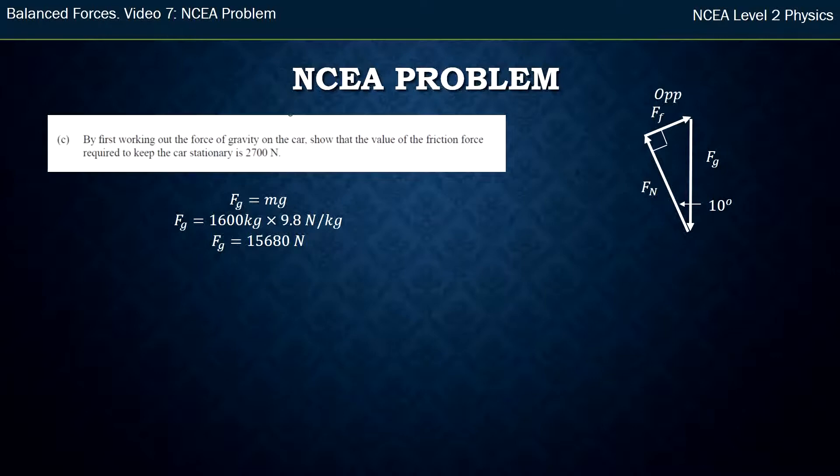Okay, then I label my vector addition diagram. I've got my opposite, which is friction, my adjacent, which is the normal force, and my hypotenuse. Remember hypotenuse is always opposite the 90 degree angle. I want to find friction force, and I know my gravity force. So these are the two sides of the triangle I care about. I've got opposite and hypotenuse. I do my SOHCAHTOA, and opposite hypotenuse is SOH. So I'm going to use sine. So sine 10 degrees is opposite, which is friction force, over hypotenuse, which is gravity force.